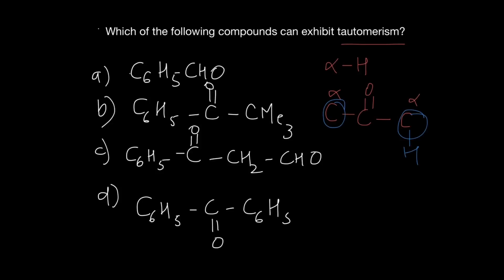So looking at these options, the compound C has a carbon atom at the alpha position which has hydrogen atoms present there. Therefore this compound will exhibit tautomerism.